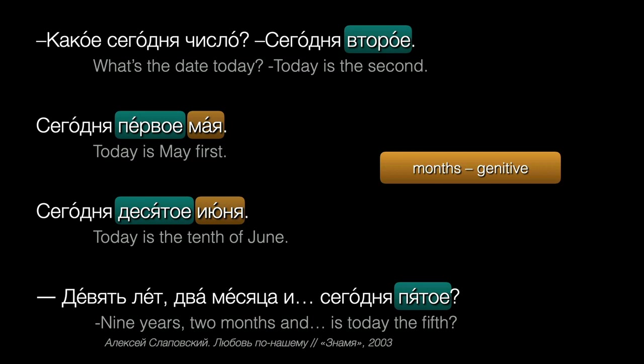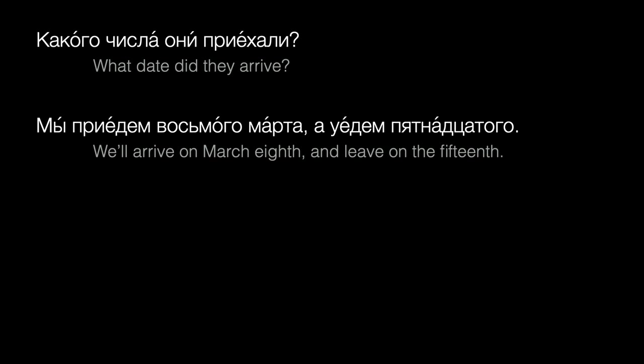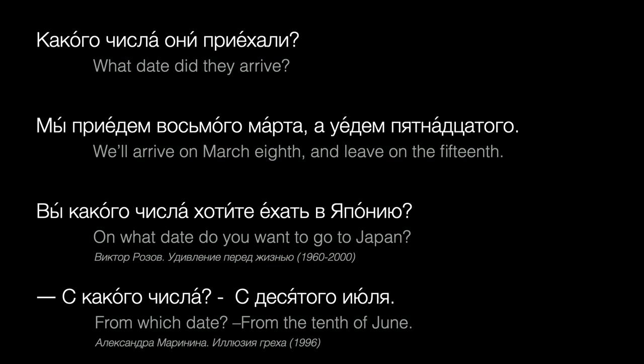That takes care of saying what the date is, but what if we want to say on which date something happens? Какого числа они приехали? Мы приедем восьмого марта, а уедем пятнадцатого. Вы какого числа хотите ехать в Японию? С какого числа? С десятого июля.